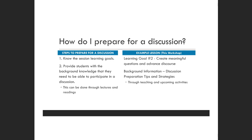Knowing those learning outcomes is really important. For this workshop, the second learning goal was to create meaningful questions and advance discourse. As a GA, you would prepare by providing students with the background knowledge through lectures and readings, then plan the activities. We as the instructors prepared the background information, the discussion preparation tips and strategies, and have activities to help ground those concepts and develop a deeper understanding of discussion techniques.